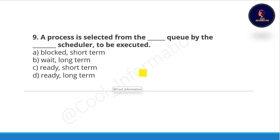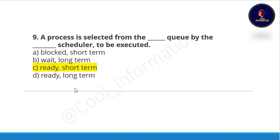The next question: a process is selected from the blank queue by the blank scheduler to be executed. Options: blocked short-term wait, long-term ready short-term, or ready long-term. The correct option is option C: a process is selected from the ready queue by the short-term scheduler to be executed.